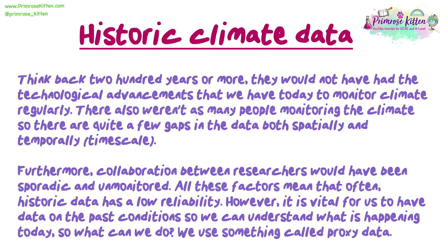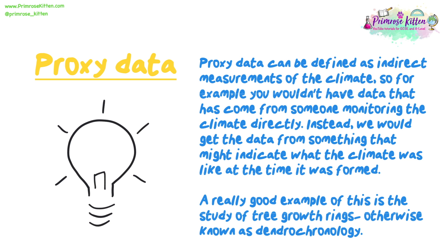However, it is vital for us to have data on past conditions so we can understand what is happening today. So what can we do? We have to use something called proxy data. Proxy data can be defined as indirect measurements of the climate. So you wouldn't have data that has come from someone monitoring the climate directly. Instead, we would get the data from something that might indicate what the climate was like at the time it was formed.